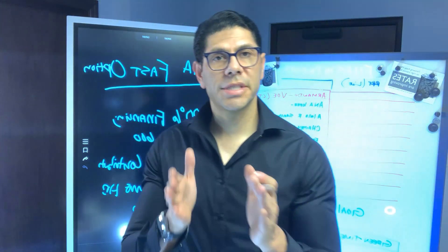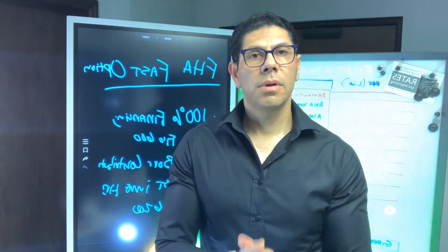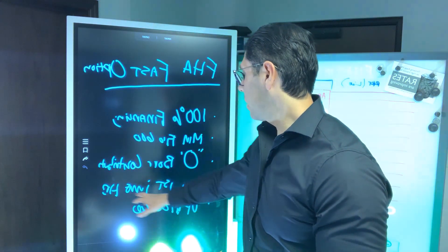Number two, the minimum FICO score is 600. Number three, there is zero borrower contribution. Number four, there is no first-time homebuyer requirement.